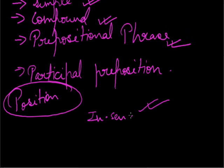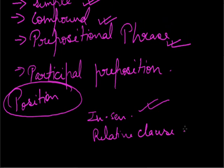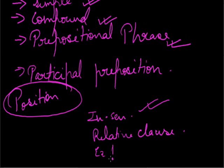Second, in the case of a relative clause. For example: 'A person to whom you were talking is my uncle' — here 'to' is the preposition used in the relative clause. 'The person you were talking to is my uncle' — 'you were talking to' is a relative clause. Third, exclamation: 'What a tough customer to deal with!' — here 'with' is placed at the end. 'What a small house to live in!' — here 'in' is the preposition.